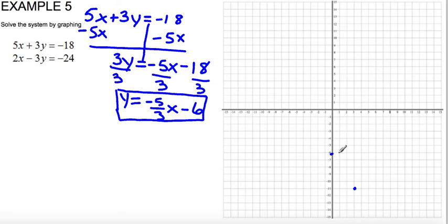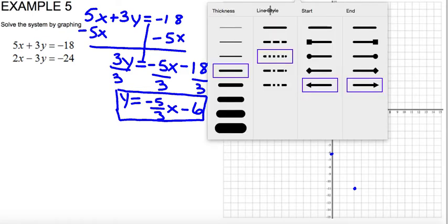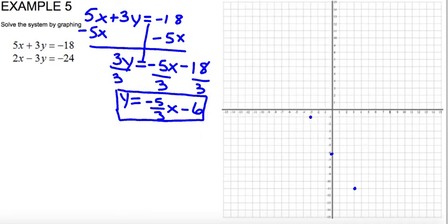And from negative 6, I can also go up 5 to the left 3 to extend my graph further. So I go 1, 2, 3, 4, 5 to the left 3: 1, 2, 3. And I draw my line connecting the points.